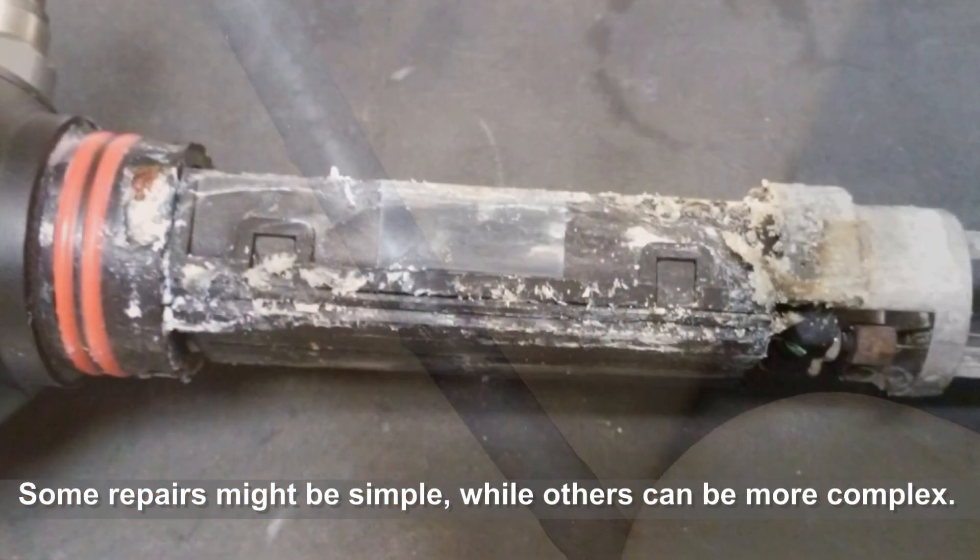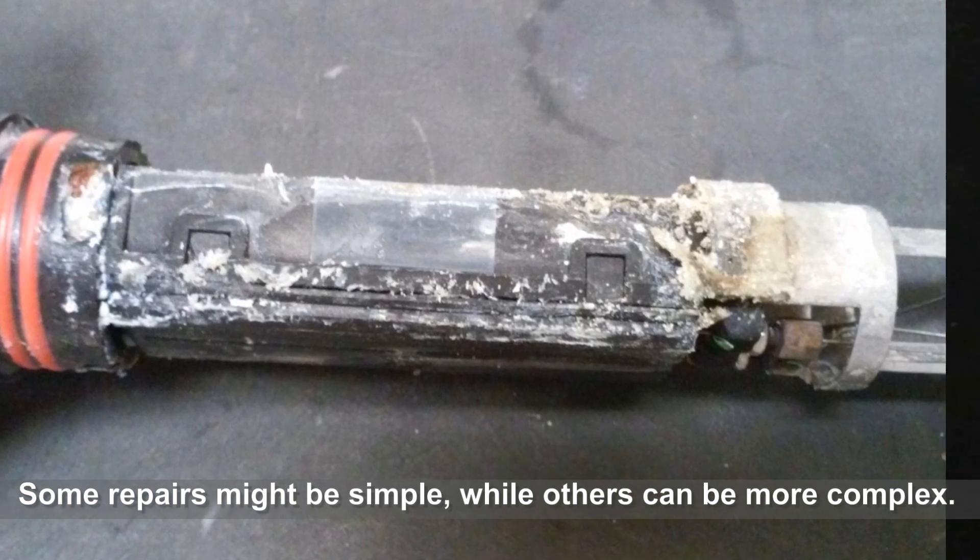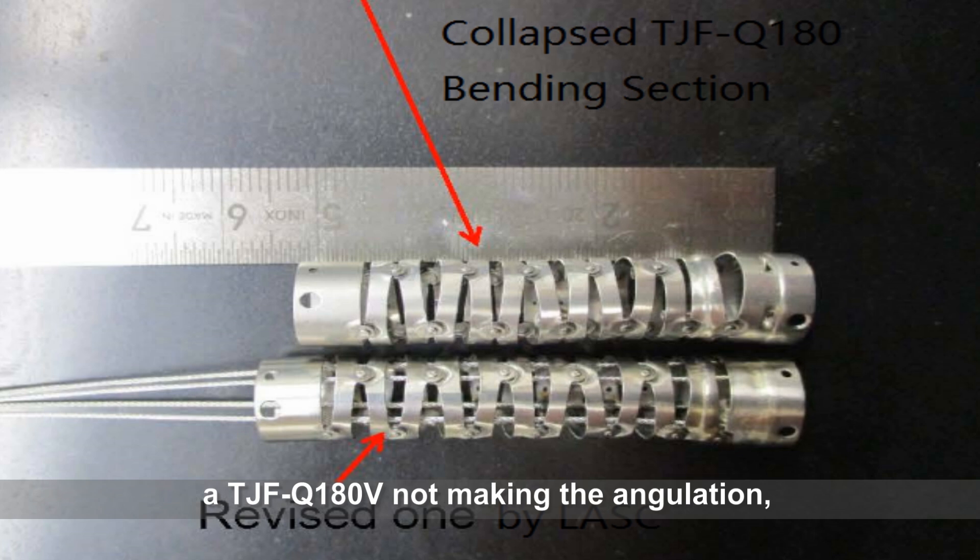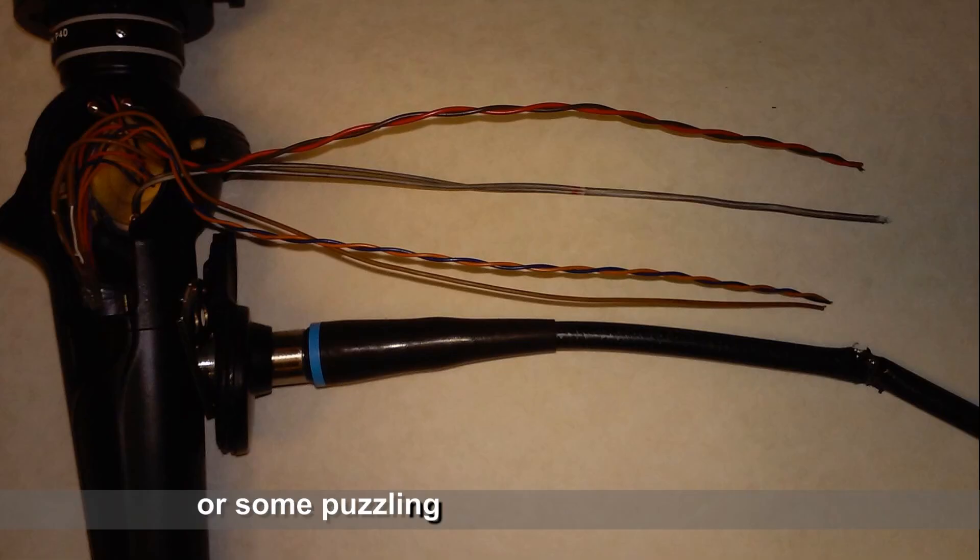Some repairs might be simple while others can be more complex. You might have a duodenoscope, DJFQ180V not making the angulation, or some puzzling insertion tube problem like blistering, buckling, or discoloration.